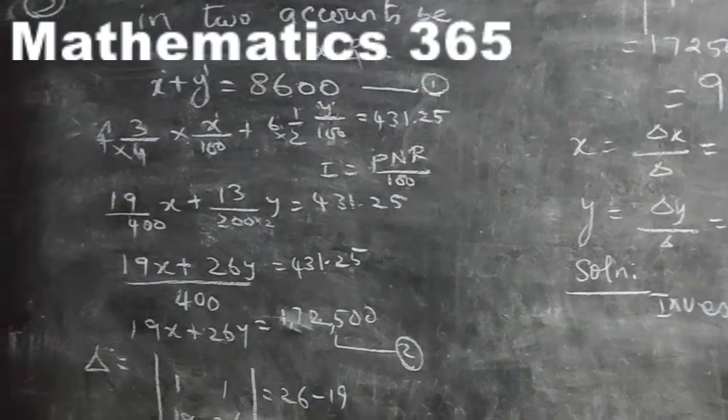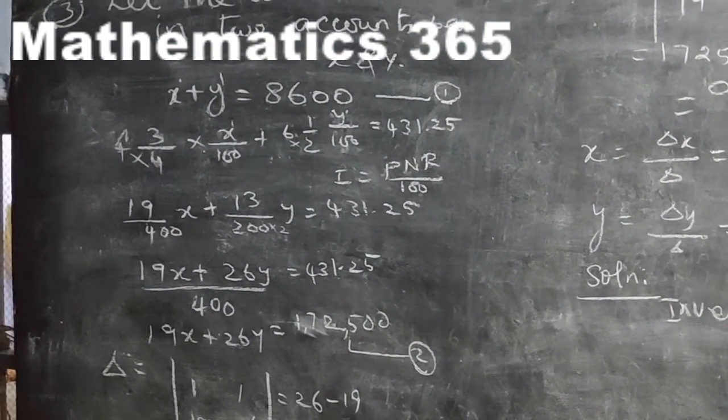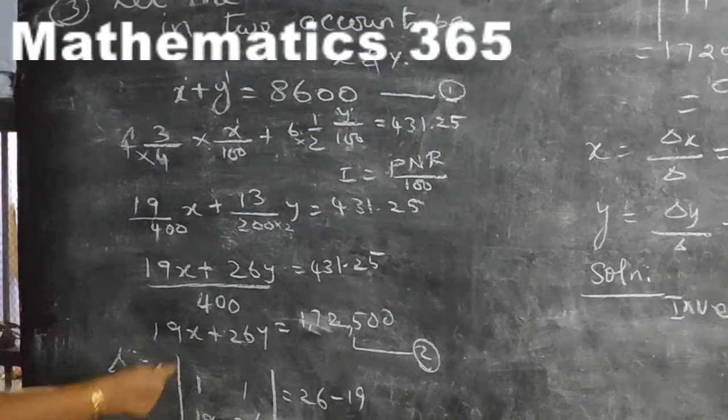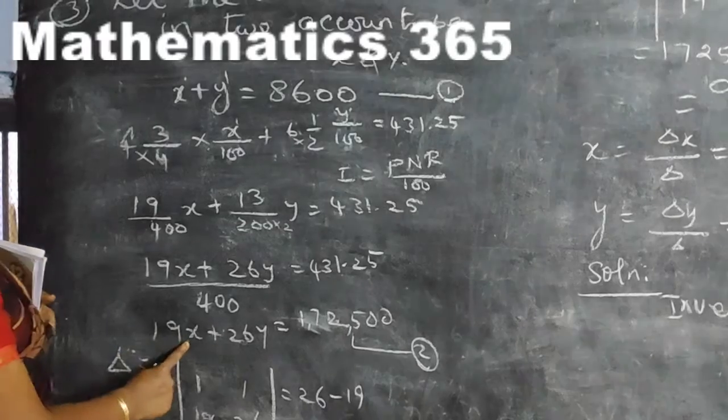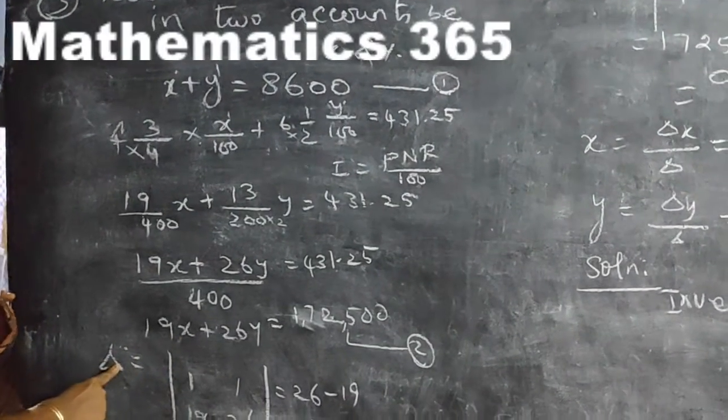Cramer's rule — the determinant method — is used to solve this system. Delta is calculated using the coefficients of the equations.